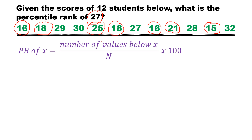So on our formula, the percentile rank of 27 uses 7 as the number of values below 27, divided by n — the total number of scores, which is 12. So we have 7 divided by 12, times 100.